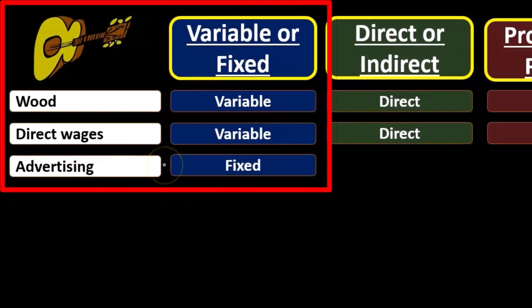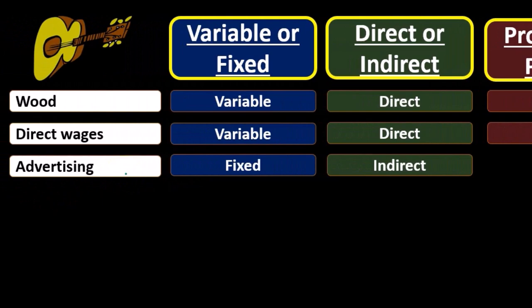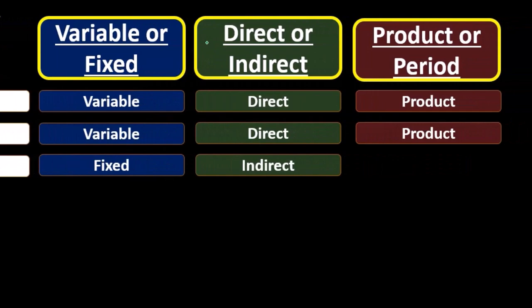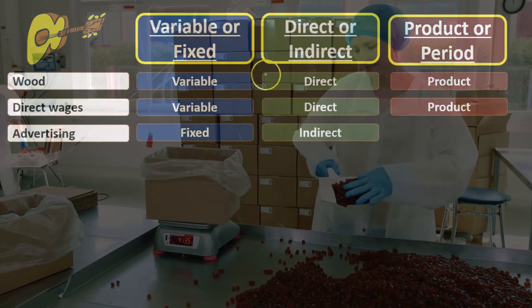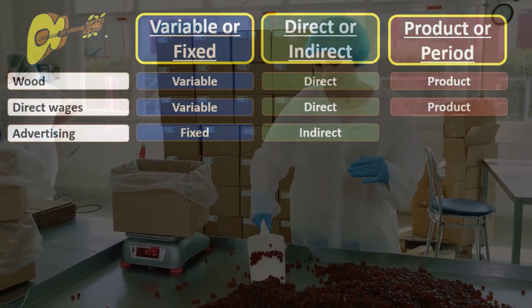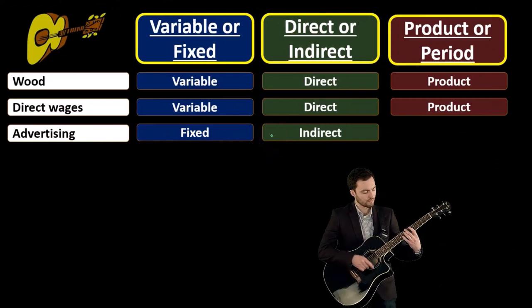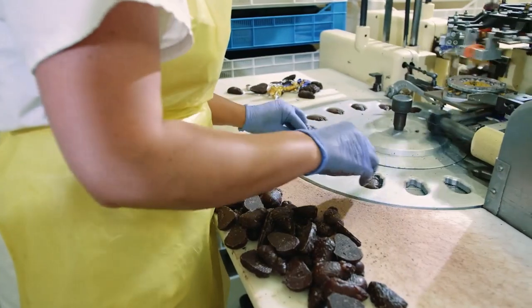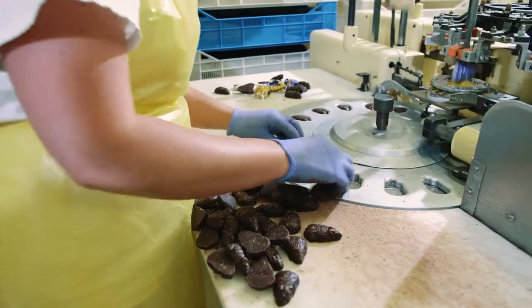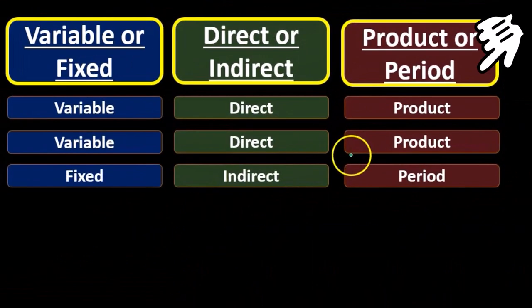Advertising is going to be typically fixed. Is it direct or indirect? It's going to be indirect. Advertising isn't dealing with production, so it's not within the production process. When we think about direct or indirect, we're often thinking about whether something can be assigned directly to a particular guitar. If it's selling and administrative, it may not be applicable in that sense — because we're not dealing with production at all. You could put it as not applicable or indirect. And it's going to be a period cost — it's not part of the production process, it's a selling and administrative cost.